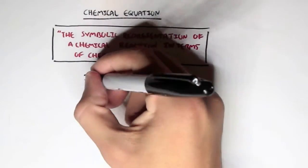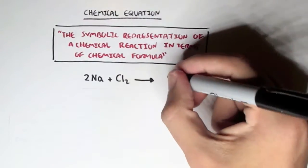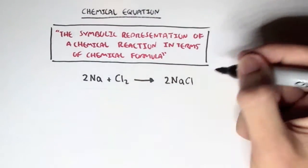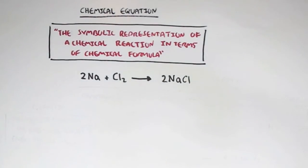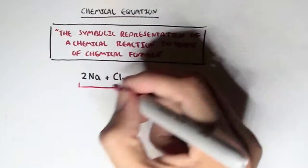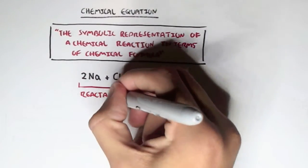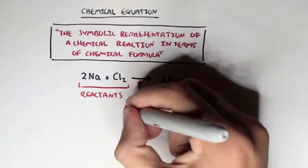For example, here we have two molecules of sodium plus one molecule of chloride gas — the gas is represented by the small two beside chloride — which will make two sodium chlorides, salt. So the elements on the left are known as the reactants, and on the right they're known as the products. This arrow pointing towards the product is the yield, the actual chemical reaction.